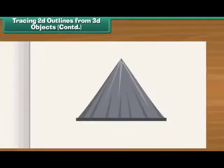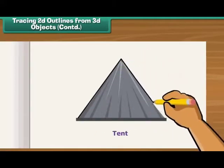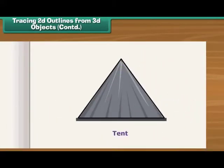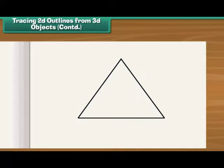Place a miniature tent on a sheet of paper. Draw a line along its outer edge. Remove the tent. You can see a triangle on the sheet.